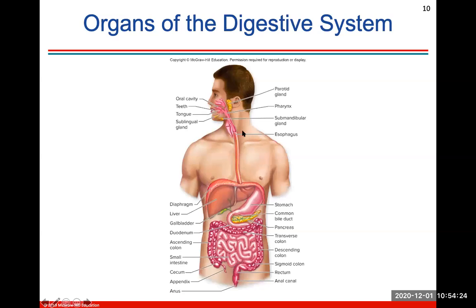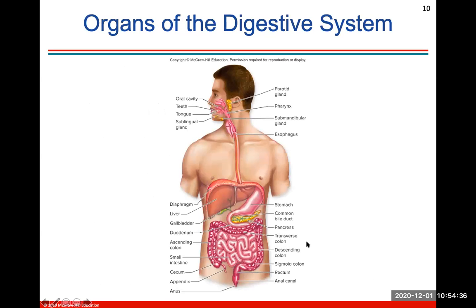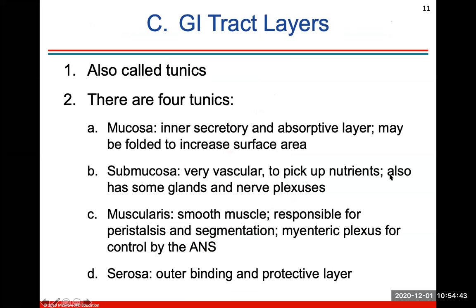Here's a look at the GI tract organs and the accessory organs. The GI tract organs are all continuous in a tube, and the accessory organs will secrete their enzymes or substances into that tube. This should be a review from anatomy — you should know the gross anatomy and parts of the digestive system well.